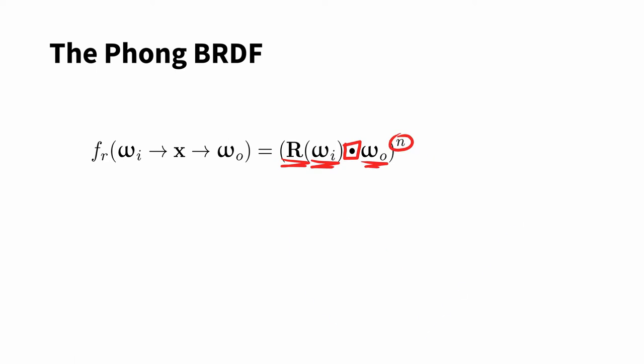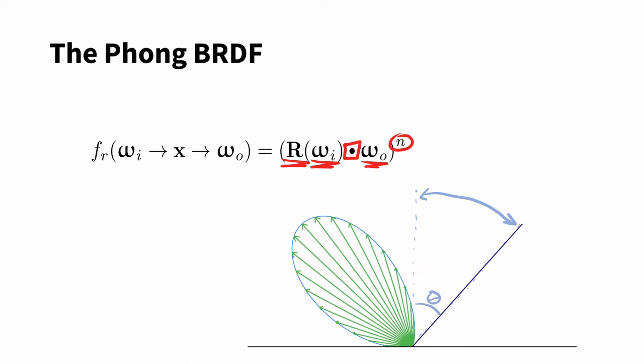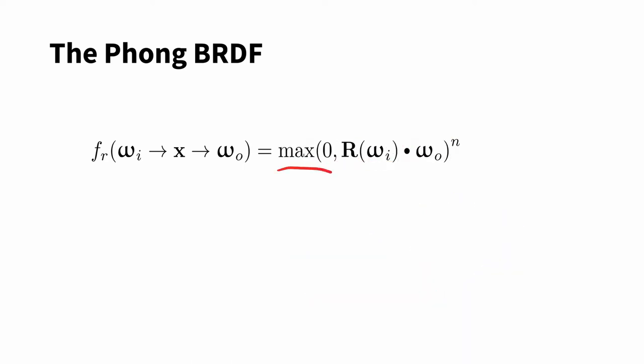Intuitively, this creates a cosine lobe, which turns out to be such a powerful concept it is used all over graphics. The incoming light direction orients the lobe. Of course, since the dot product can sometimes be negative, you have to clamp it to 0, and you need a specular coefficient and a normalization factor.